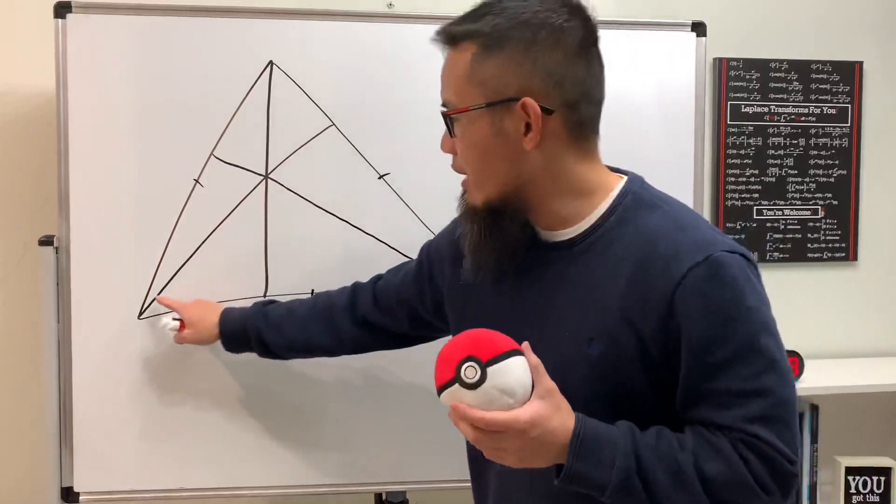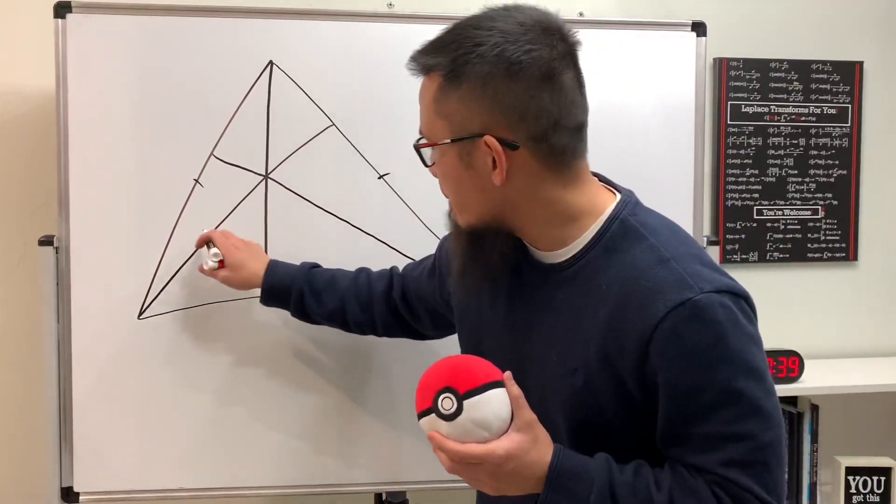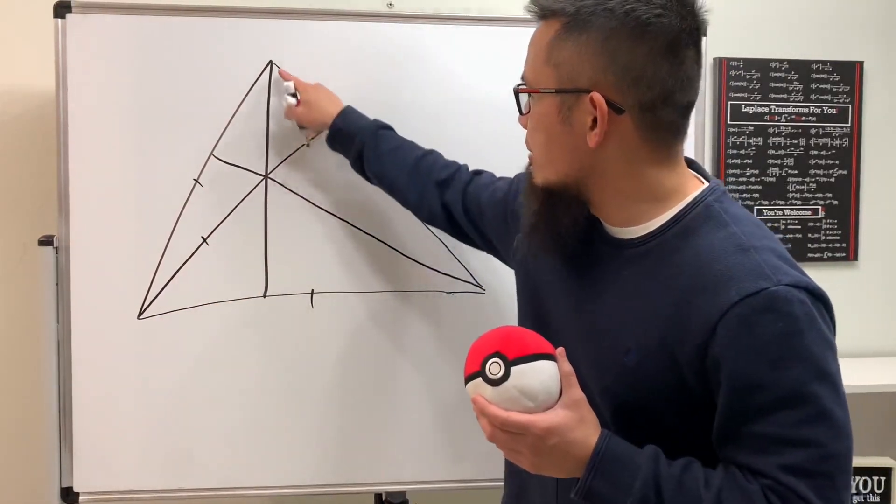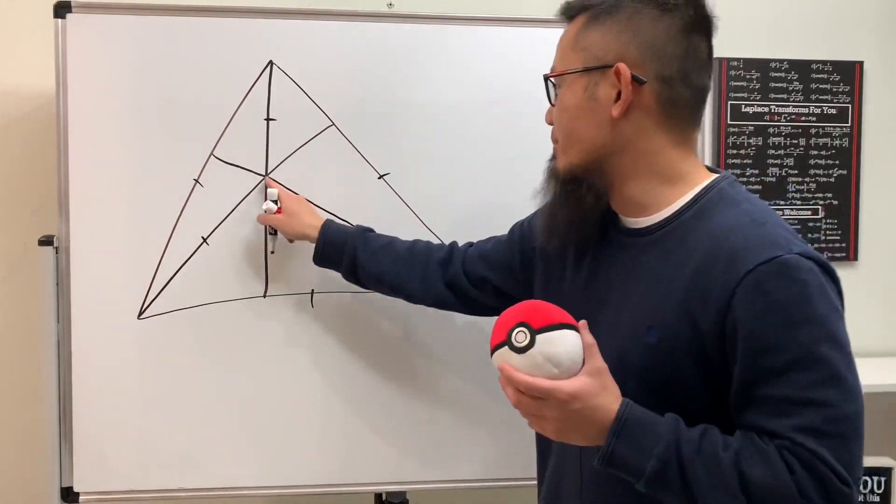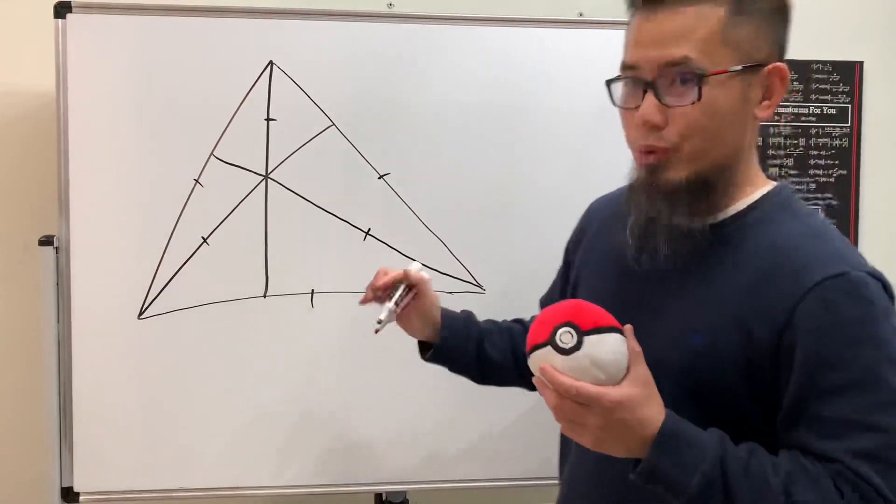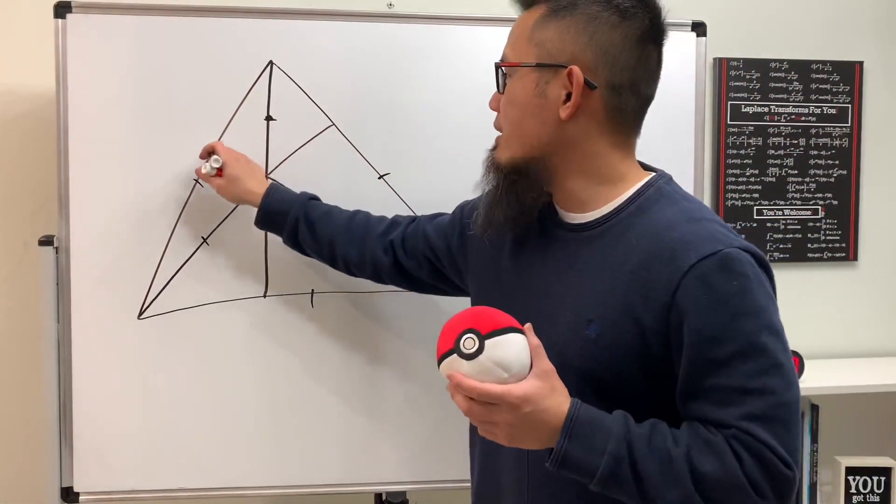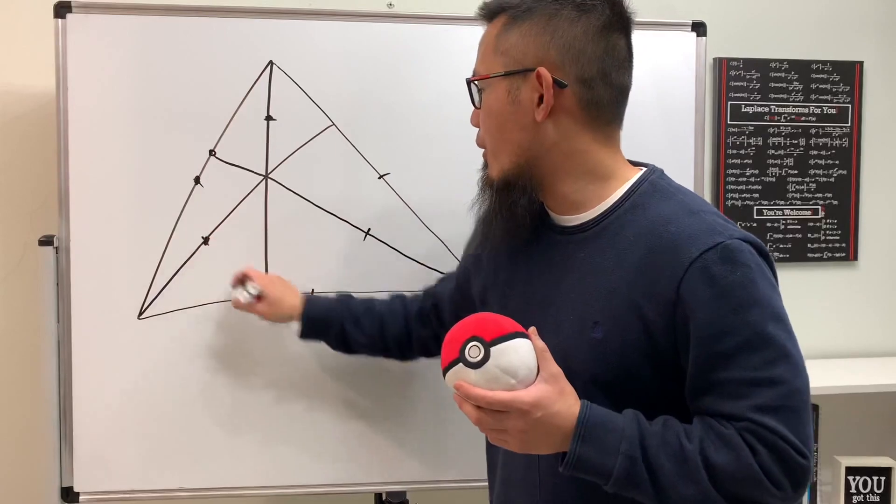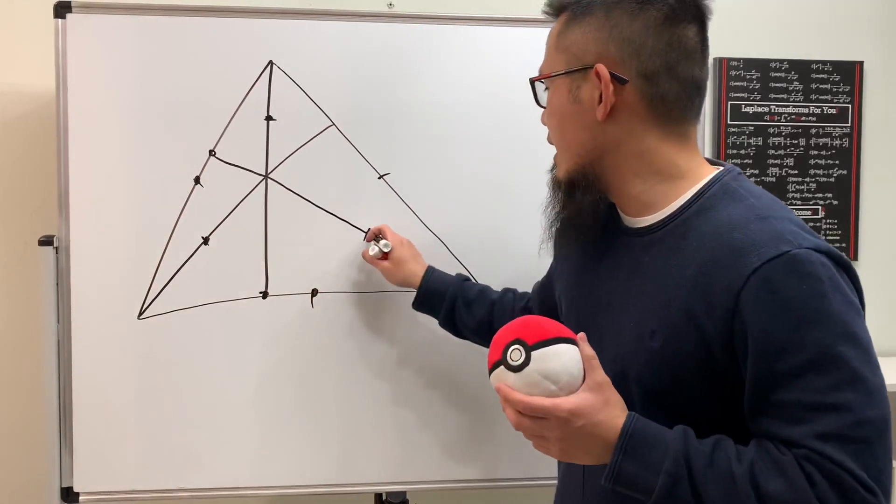The next step is that from here to here, you look at the midpoint again, so it's probably right here. Then the midpoint from here to here is probably right here, and the midpoint from here to here is most likely right here. Now you have the nine points: one, two, three, four, five, six, seven, eight, nine.